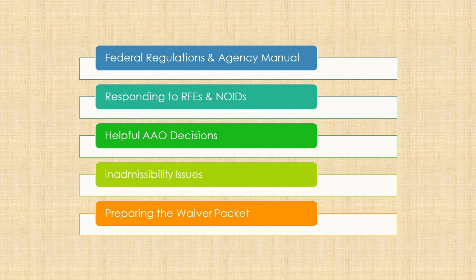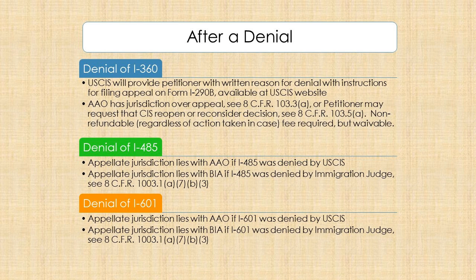In the recap: we covered the federal regulations and agency manual on RFEs and NOIDs, gave tips and legal arguments to help in responding to those, and pointed out some relevant AAO decisions. We also discussed inadmissibility issues and gave pointers on preparing the waiver packets. We here at CILA are always available for any further follow-up and more specific technical assistance on any of this.